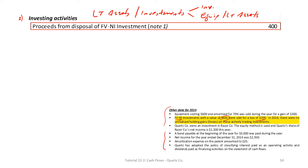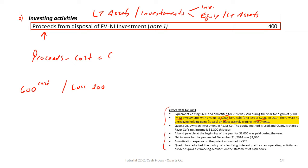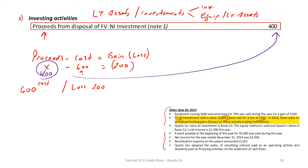The FV investment balance at year-end is $900, it started at $150, and investments with a value of $600 were sold. To find the proceeds, use: proceeds − cost = gain or loss. We don't know proceeds, cost is $600, and the loss is $200. So proceeds must be $400. We sold the investment for $400 cash — that's a cash inflow.